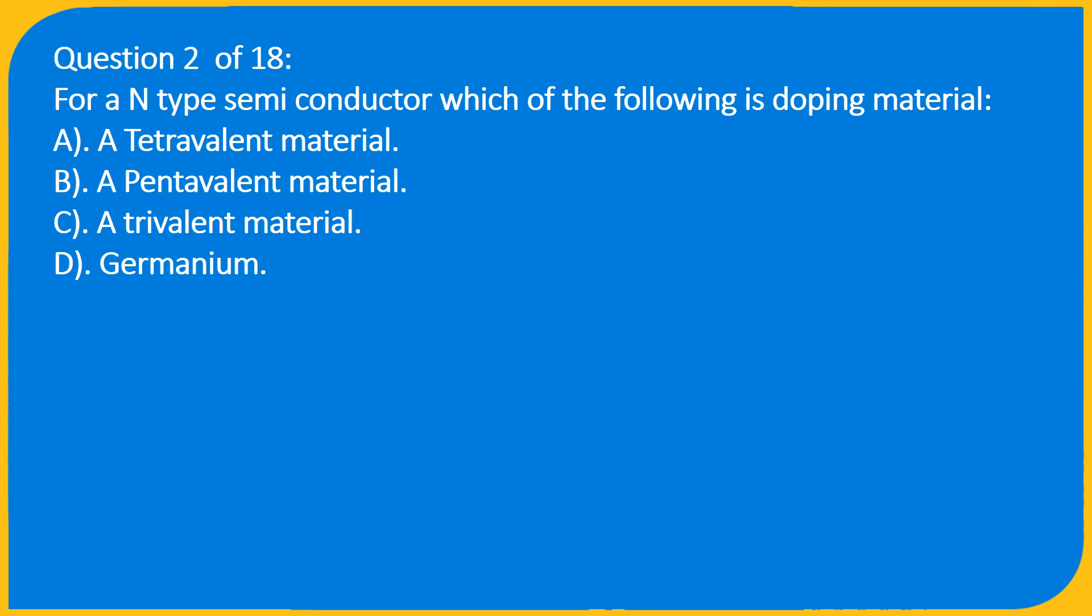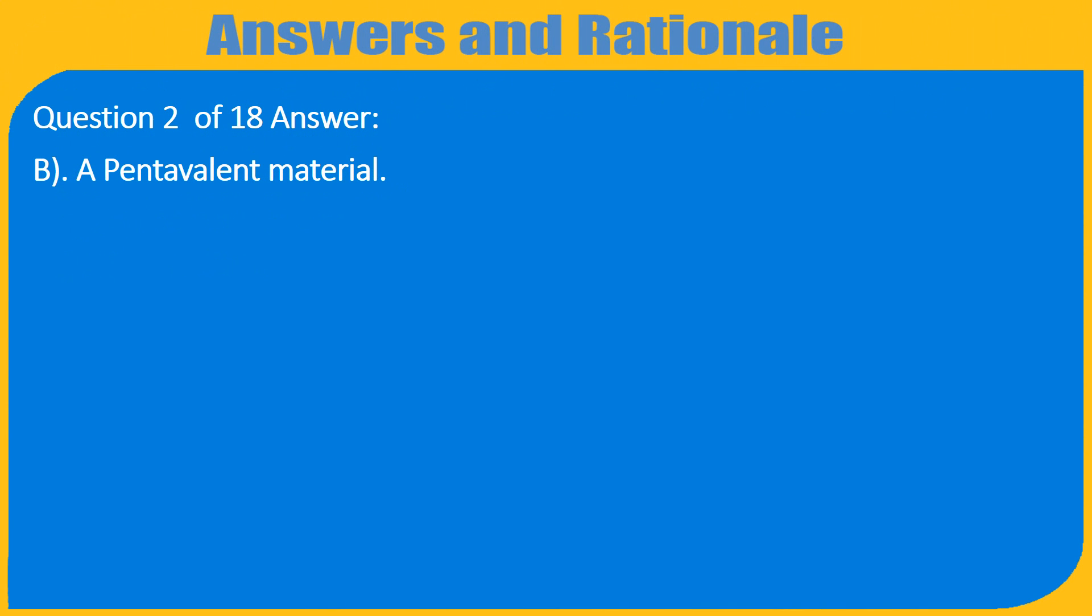Question 2 of 18: For an N type semiconductor which of the following is doping material: A. A tetravalent material, B. A pentavalent material, C. A trivalent material, D. Germanium. Question 2 of 18, Answer: B. A pentavalent material.